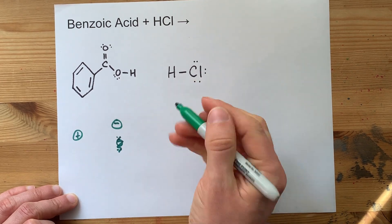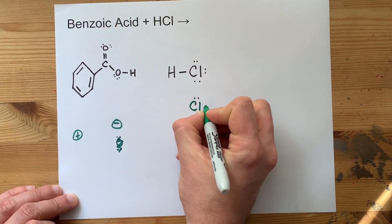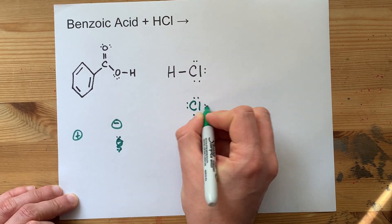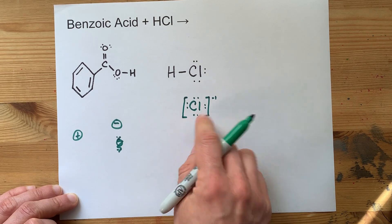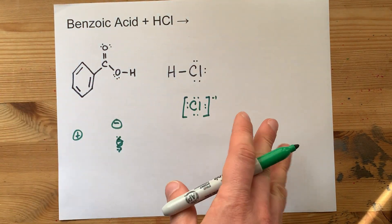But chlorine, specifically chloride, which has a full octet of eight electrons in its outer shell, is not powerful enough to make that happen.